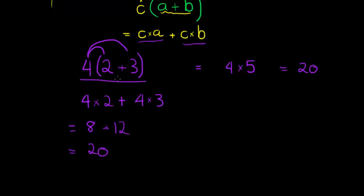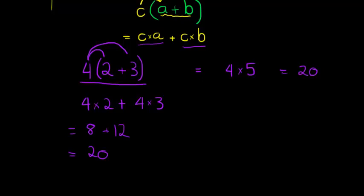You can see we got the same answer simplifying this expression in two different ways. In one way we simplified the inside of the bracket by saying two plus three is five and then only multiplying with the four. In the other way we distributed the four to every term inside and then got our twenty.